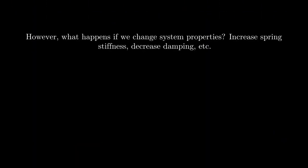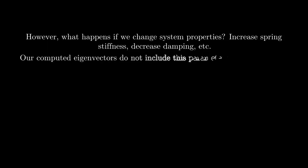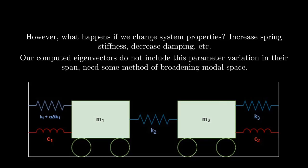Now we will explore what happens if we change system properties, like increasing the spring stiffness. Our computed eigenvectors do not include this parameter variation in their span, so we need some method of broadening the modal space to account for this. In the diagram, we see the same mass-spring damper setup, except spring1 has increased in stiffness.